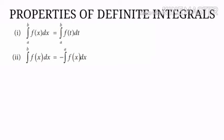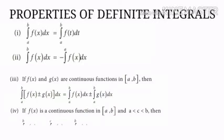The third property says that the integral from a to b of f(x) plus or minus g(x) dx can be written as the integral from a to b of f(x) dx plus or minus the integral from a to b of g(x) dx.